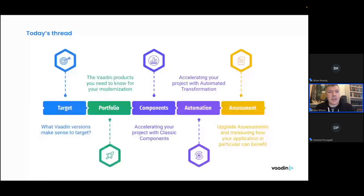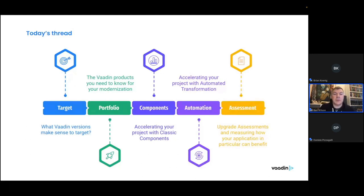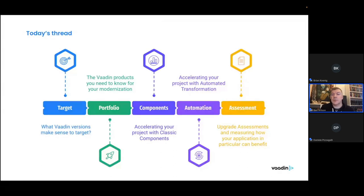We'll be looking at five different things today in our webinar over the next half hour. We'll look at the different target versions you could be thinking about migrating to. Then we'll look at the portfolio — Vaadin's collection of products and tools that can help reduce the cost and speed up your upgrade project. We'll zoom in on classic components and automated transformation, and then close with a few words about our assessments.